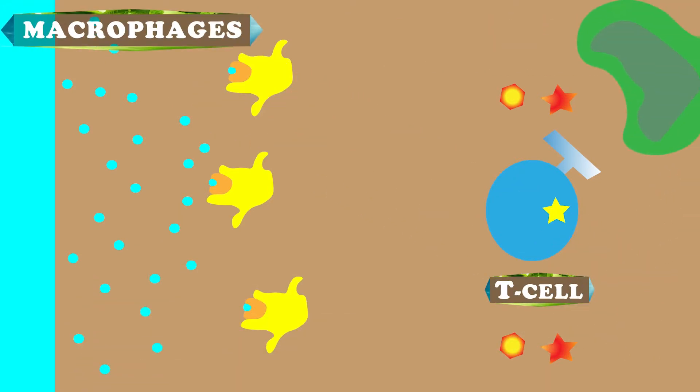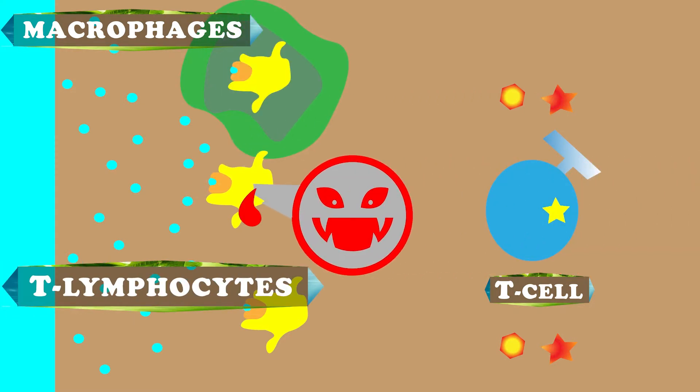They call in macrophages which consume other cells, and they call in T lymphocytes that kill cells. They also call in more helper T cells. All of the cells are releasing signals to recruit more cells to deal with the urushiol invasion.